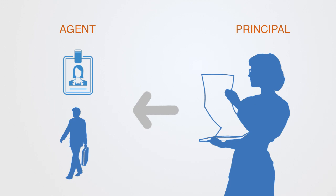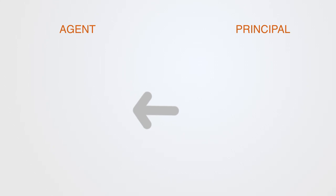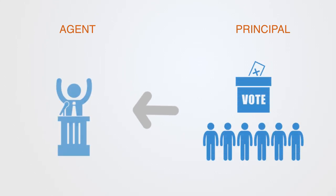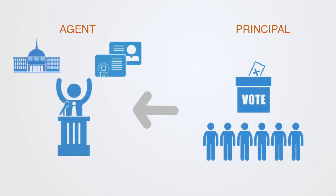Or to take another example, this agent-principal relation is the one that we have with our politicians within democratic republics. We hand over our choices within the political decision-making process to our representatives.